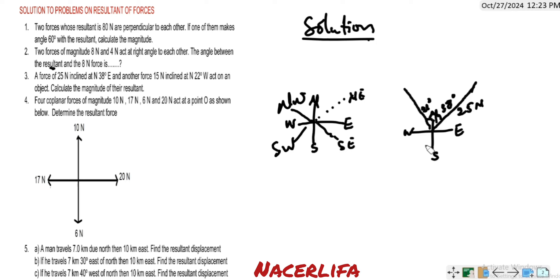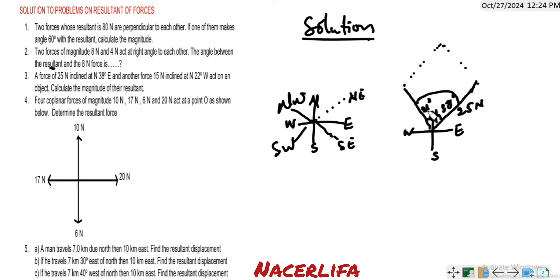The question says calculate the magnitude of the resultant. To do this, we make the forces form a parallelogram. This side is the same as this side, and this side is the same as this side. The total of this angle is 22 plus 38 degrees.